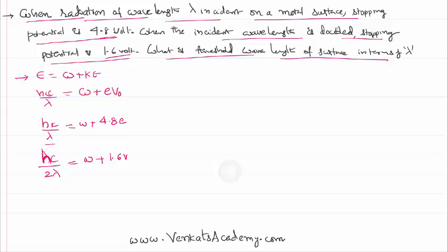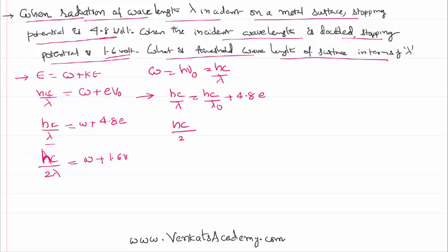We can further write that the work function equals h*nu₀, which equals hc/lambda₀. So the first equation becomes hc/lambda = hc/lambda₀ + e(4.8), and the second equation for doubled wavelength is hc/(2*lambda) = hc/lambda₀ + e(1.6). Since the metal is the same, the threshold wavelength lambda₀ is also the same, but the stopping potential is different.